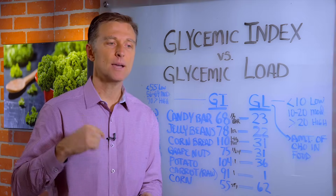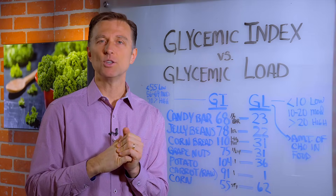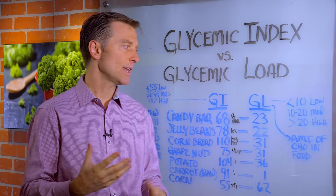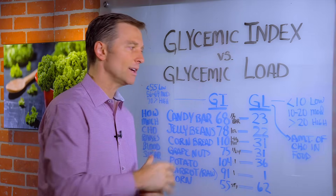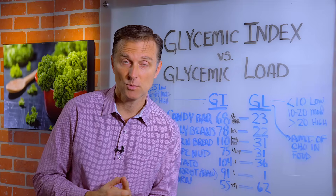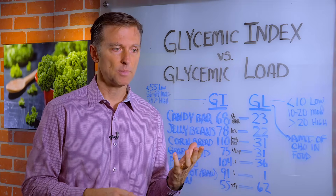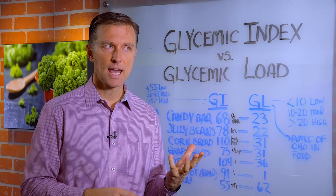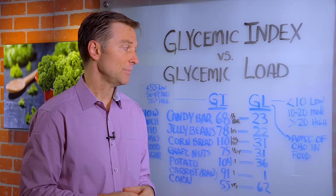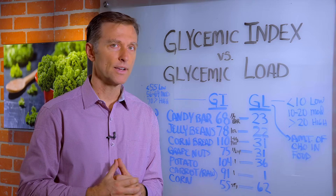I want you to type down the food that you loved and ate as a child that was a carbohydrate that wasn't too good for you. Mine was a combination of Reese's peanut butter cups, Doritos, and pizza. So what was yours? I'm curious.